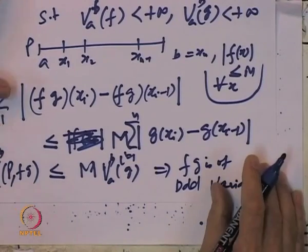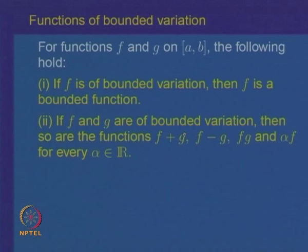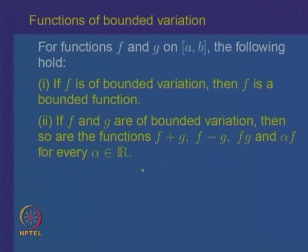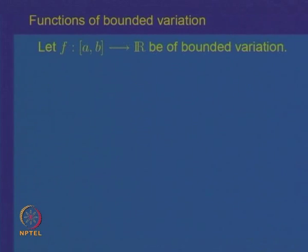Basically, these are all easy properties to check: if f and g are of bounded variation, then f + g, f − g, the product f·g, and αf are all functions of bounded variation. Here are some further facts about functions of bounded variation which are of importance. We will prove them one by one.